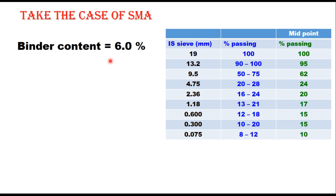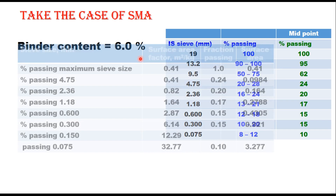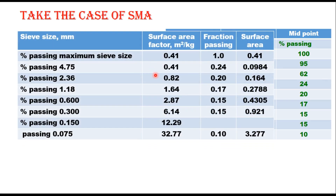With binder content at 6%, the surface area factor can be calculated in tabular form. For percent passing the maximum sieve size, 0.041 is used; fraction passing is 1.0 (100%), giving surface area contribution of 0.41. For 4.75 mm, 24% passing gives 0.24 multiplied by the factor 0.41, yielding 0.0984. For the next size, the surface area factor is 0.82, with 20% passing giving a fraction of 0.20.